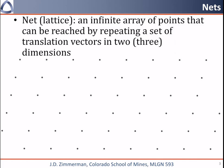First, we'll start with the definition of a net. A net is an infinite array of points that can be reached by repeating a set of translation vectors in 2 dimensions. A lattice is the same thing but in 3 dimensions. Note that many people use the word lattice for 2 dimensions as well. Below we have an oblique net, and we can reach any point by repeating the translation vectors t1 and t2. We can get to any point going in the forward or backward direction.